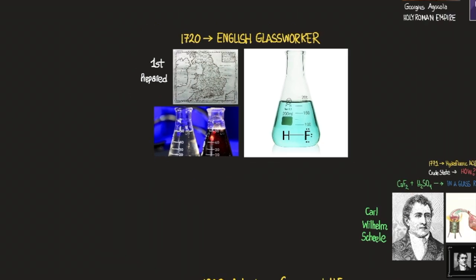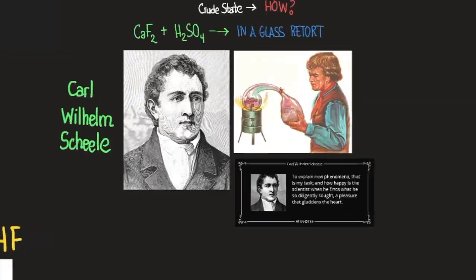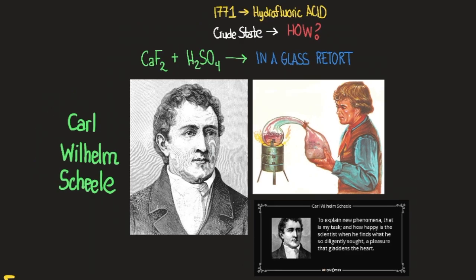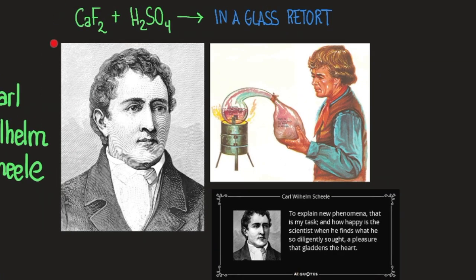Hydrofluoric acid eventually became useful in creating pure fluorine. The next person to get closer to its separation was Carl Wilhelm Scheele. He said: 'To explain new phenomena — that is my task, and how happy is the scientist when he finds what he so diligently sought.' He took concentrated sulfuric acid and combined it with calcium difluoride — also known as fluorospar or fluorite — which is one calcium atom and two fluorine atoms.